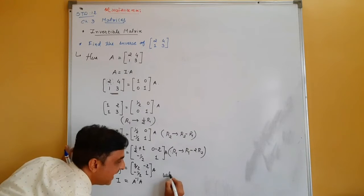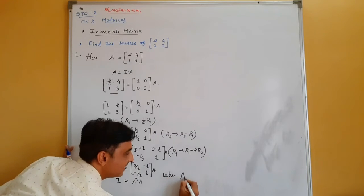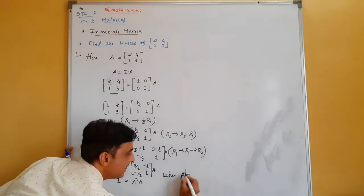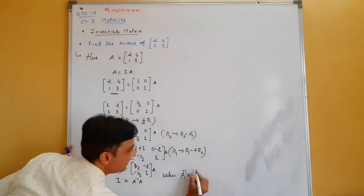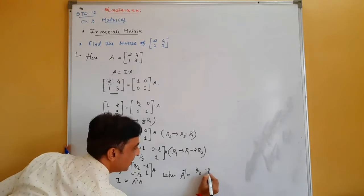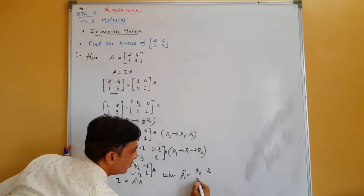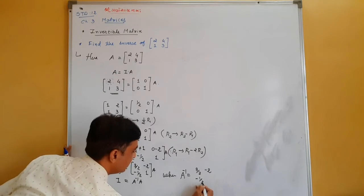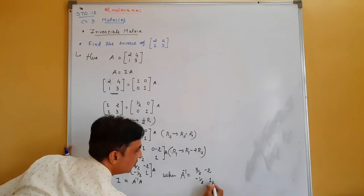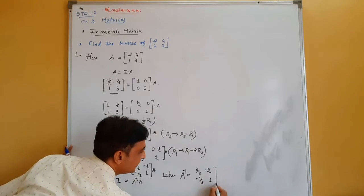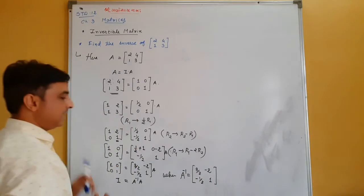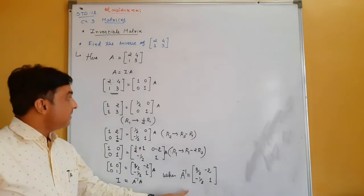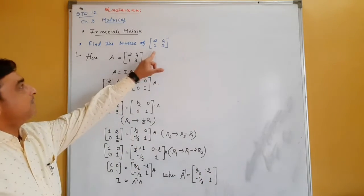So the inverse of the matrix [2,4;1,3] is A-inverse equals [3/2,-2;-1/2,1].